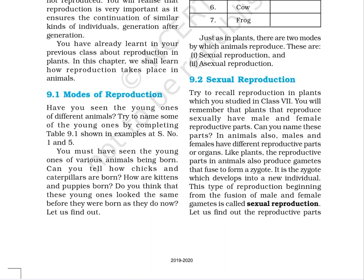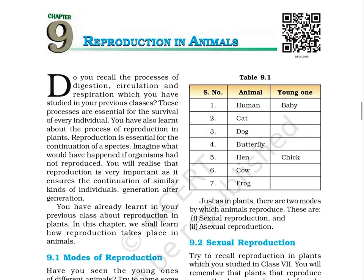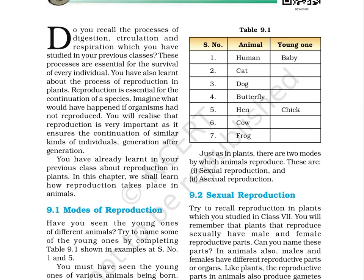9.1 Modes of Reproduction. Have you seen the young ones of different animals? Try to name some of the young ones by completing table 9.1 shown in examples at serial number 1 and 5. You must have seen the young ones of various animals being born. Can you tell how chicks and caterpillars are born? How are kittens and puppies born? The table has three columns: serial number, animal, and young one.